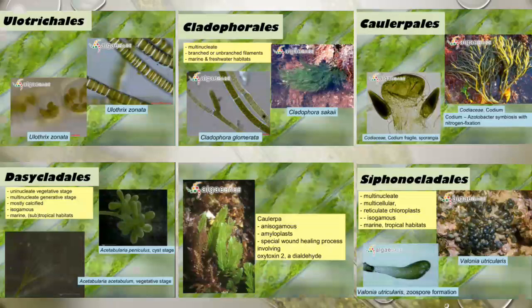Some orders have features such as being uninucleate or multi-nucleate, isogamous or oogamous, living in marine water, and some live in tropical habitats. Some are multi-nucleate and multicellular, and isogamous.